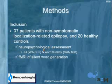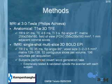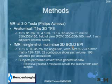For the neuropsychological assessment, we obtained the IQ and the word fluency, for which we used a battery of tests meant to assess aphasia. For fMRI, we did silent word generation, and we did those fMRI measurements at 3 Tesla. We obtained a T1-weighted image for anatomical information, and we did functional MRI using a standard BOLD EPI sequence.